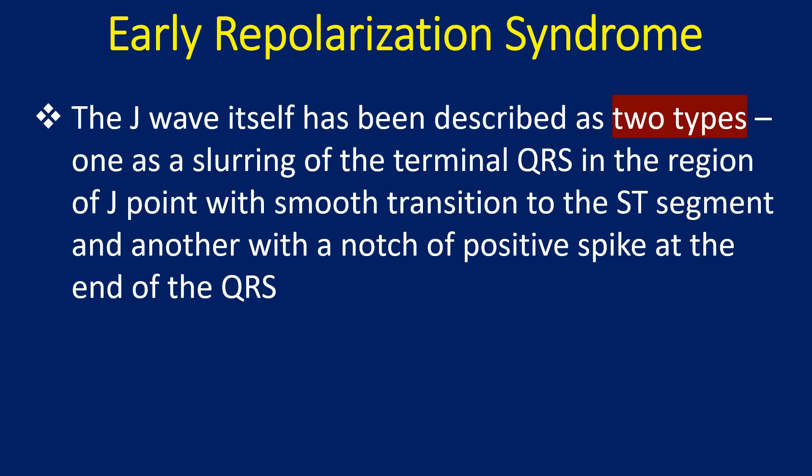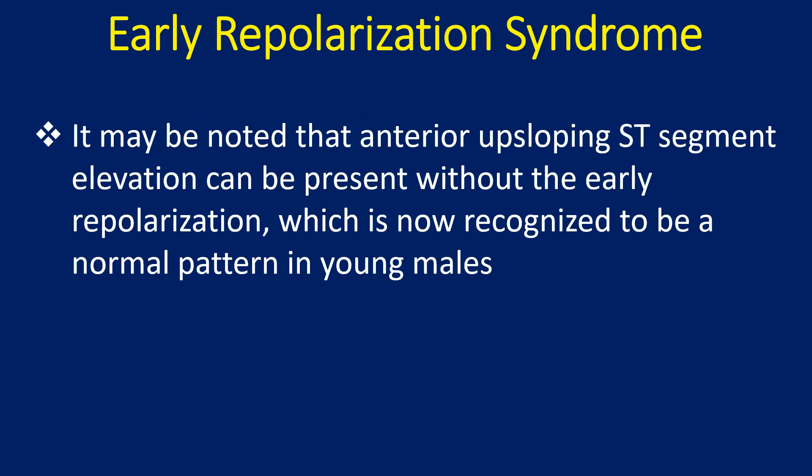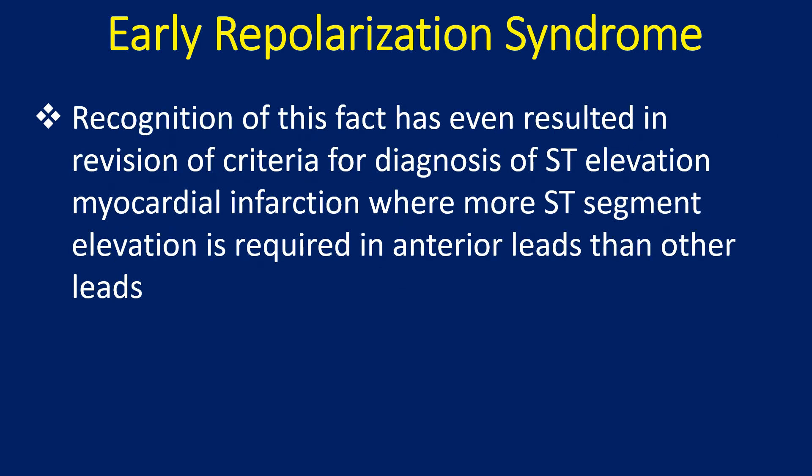The J wave itself has been described as two types: one as a slurring of the terminal QRS in the region of the J point with smooth transition to the ST segment, and another with a notch or positive spike at the end of the QRS. It may be noted that anterior upsloping ST segment elevation can be present without early repolarization, which is now recognized to be a normal pattern in young males. This recognition has even resulted in revision of criteria for diagnosis of ST elevation myocardial infarction, where more ST segment elevation is required in anterior leads than other leads.